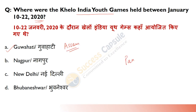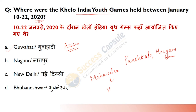Sports event 2021 mein Panchkula, Haryana mein hone wale hain. Aur iske baare mein yeh bhi pooch sakte hain ki winner kaun tha. Toh Maharashtra winner thi, followed by Haryana aur uske baad Delhi.